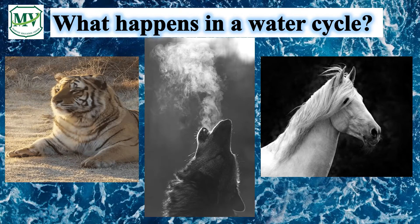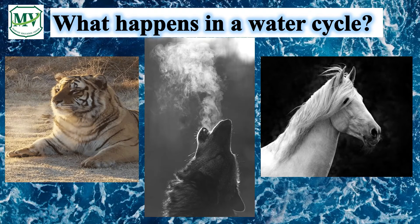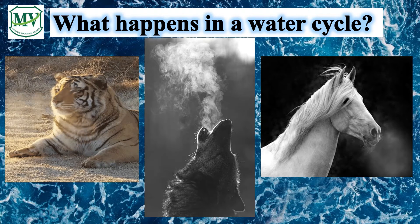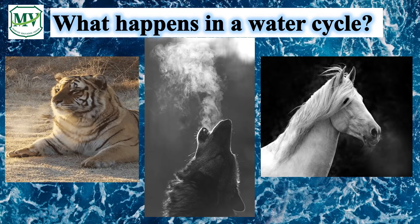Do you know that animals also help in the water cycle? Animals release water in the form of water vapor to the atmosphere through breathing. Animals also release water in the form of sweat and remove excess water in the form of urine. The water from the sweat and urine evaporate to become water vapor.